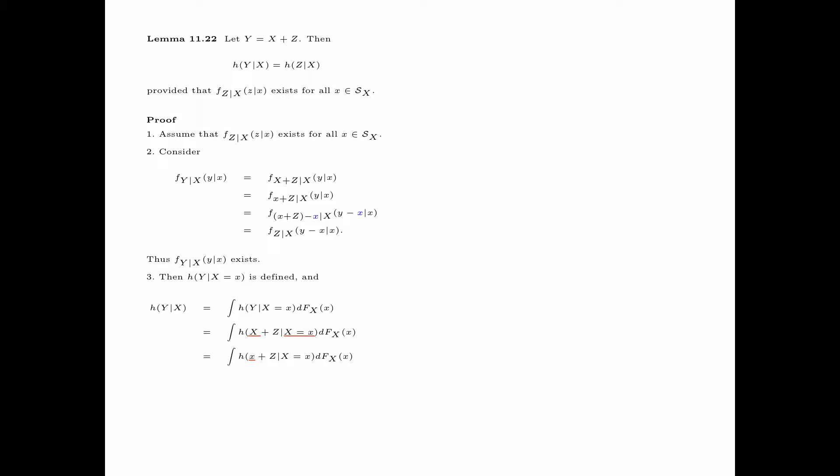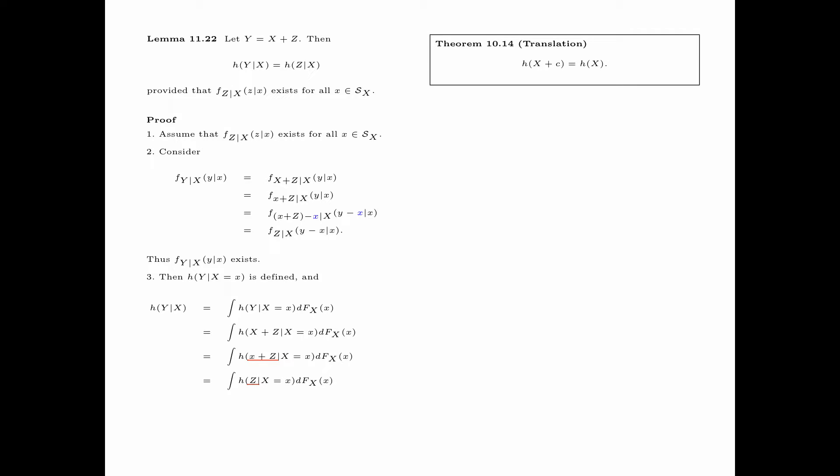Thus we have shown that if the conditional PDF f(z|x) exists, then the conditional PDF f(y|x) also exists, and the conditional differential entropy of y given x = small x is defined. The conditional differential entropy of y given x equals the integral of the conditional differential entropy of y given x = small x with respect to f_x(x). Here, y = x + z, and conditioning on x = small x, we replace the random variable x by small x. The conditional differential entropy of x + z equals the conditional differential entropy of z by the translation property of differential entropy. This integral equals the conditional differential entropy of z given x, completing the proof of the lemma.